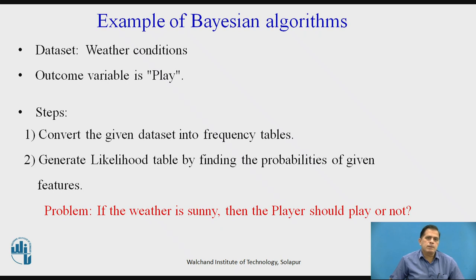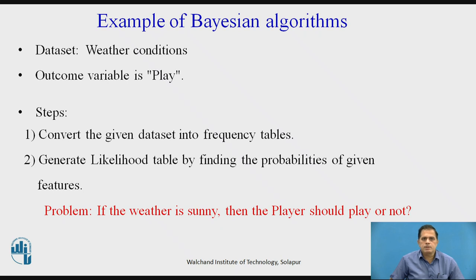Let us see a real world problem based on Bayesian algorithms. We have a dataset with weather conditions and an outcome variable called 'play'. This algorithm suggests, based on weather conditions, whether a player should play or not. The problem is: if the weather is sunny, should the player play or not? To solve this, the steps are: first, convert the given dataset into a frequency table; second, generate a likelihood table by finding the probabilities of given features, creating two tables — one for probability of occurring events, and one for probability of hypothesis before and after observation.